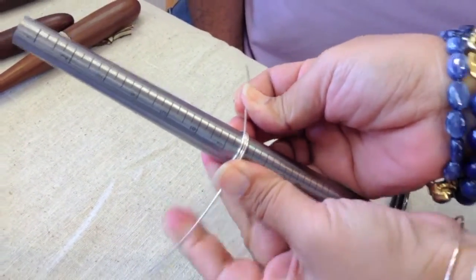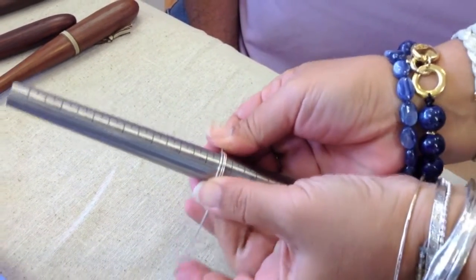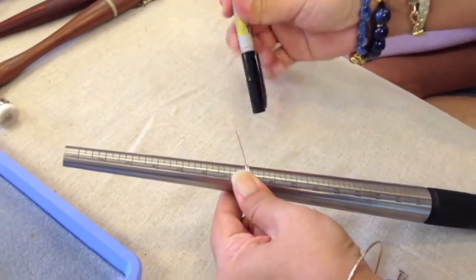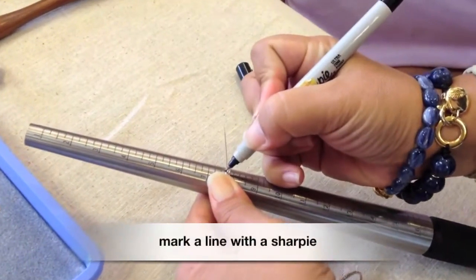When the wires overlap, you'll pull it really tight and hold it in place and then you'll get a sharpie pen and make a mark across all 3 wires.